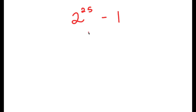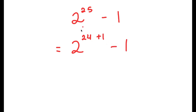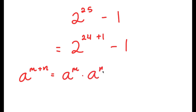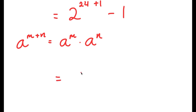In this video, I'm going to solve the problem 2 to the power of 25 minus 1. To start, I'm going to rewrite 2 to the power of 25 as 2 to the power of 24 plus 1, and then we have our minus 1 at the end. The reason I'm rewriting 25 as 24 plus 1 is so I can use the property a to the power of m plus n equals a to the power of m times a to the power of n. So 2 to the power of 24 plus 1 equals 2 to the power of 24 times 2 to the power of 1, minus 1.